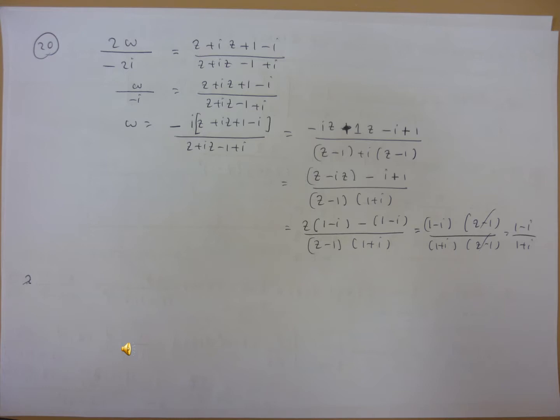Therefore, minus i times z plus z minus i plus 1, divided by z minus 1 plus i times z minus 1. So then z minus i, z minus i plus 1, divided by z minus 1 multiplied by 1 plus i.